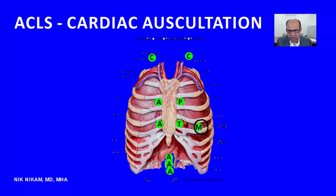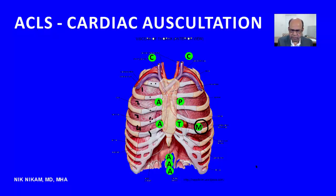Before I get into the positions, I want to give you an overview of the ribcage, because most of these areas are referenced to the intercostal spaces. Here is the sternum, the first rib, the second rib, the third rib, the fourth rib, and the fifth rib. So this is the first intercostal space, the second, the third, and the fourth — and similarly on the left side we have the first, second, third, and fourth intercostal spaces.